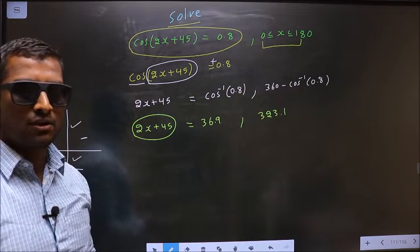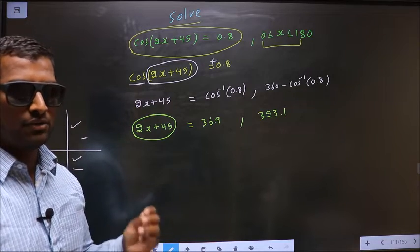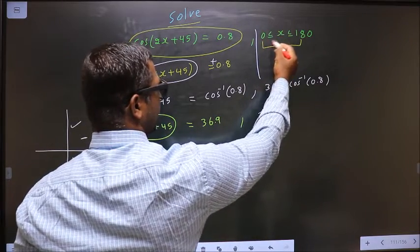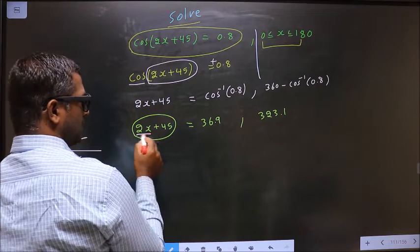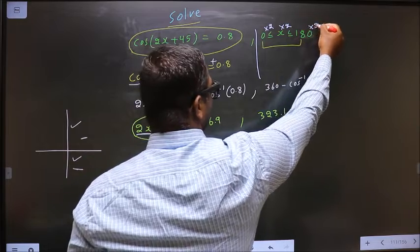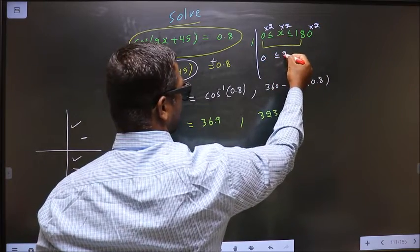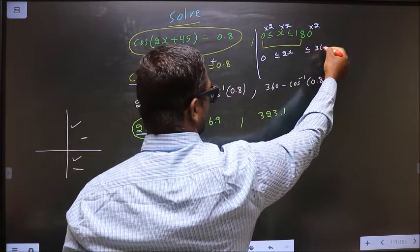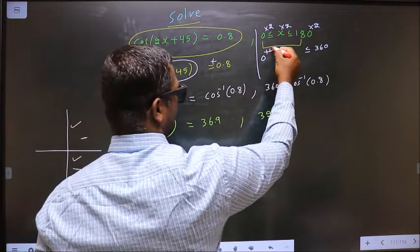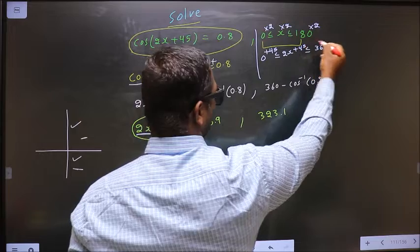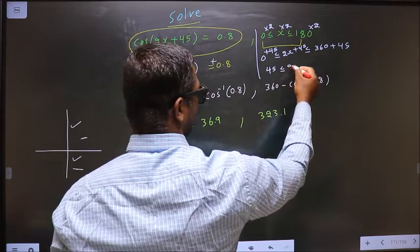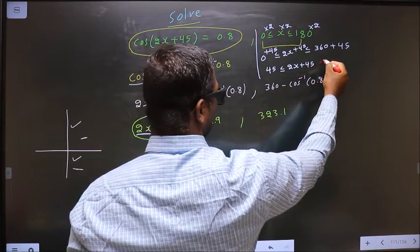Here x lies in the interval 0 to 180. First to get 2x, we multiply by 2, so we get 0 ≤ 2x ≤ 360. Now I should also get 45, so I add 45. So I get 45 ≤ 2x + 45 ≤ 405.